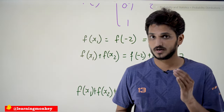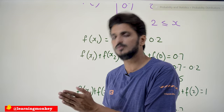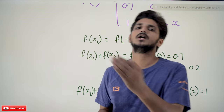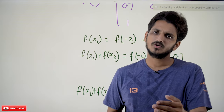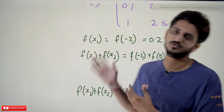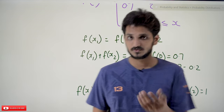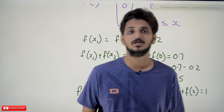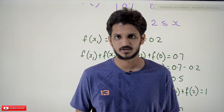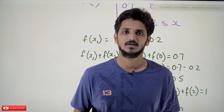You have to understand: if the probability mass function is provided, you can convert it into the cumulative distribution function. If the cumulative distribution function is provided, you can convert it into the probability mass function. We have shown examples for both. Hope you understand the concept. If you have any questions, please post them in the comment section below. Please subscribe to our channel and press the bell icon for the latest updates.